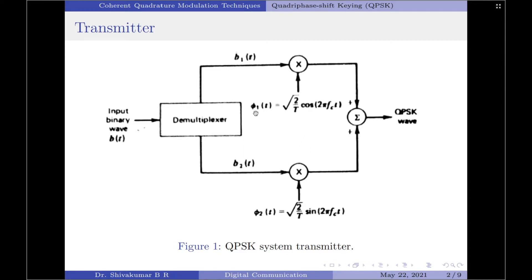The orthonormal basis functions phi1(t) and phi2(t) are quadrature carriers. You should also understand, each of the branches in the transmitter here is nothing but a binary phase shift keying transmitter. It is nothing but a product modulator.